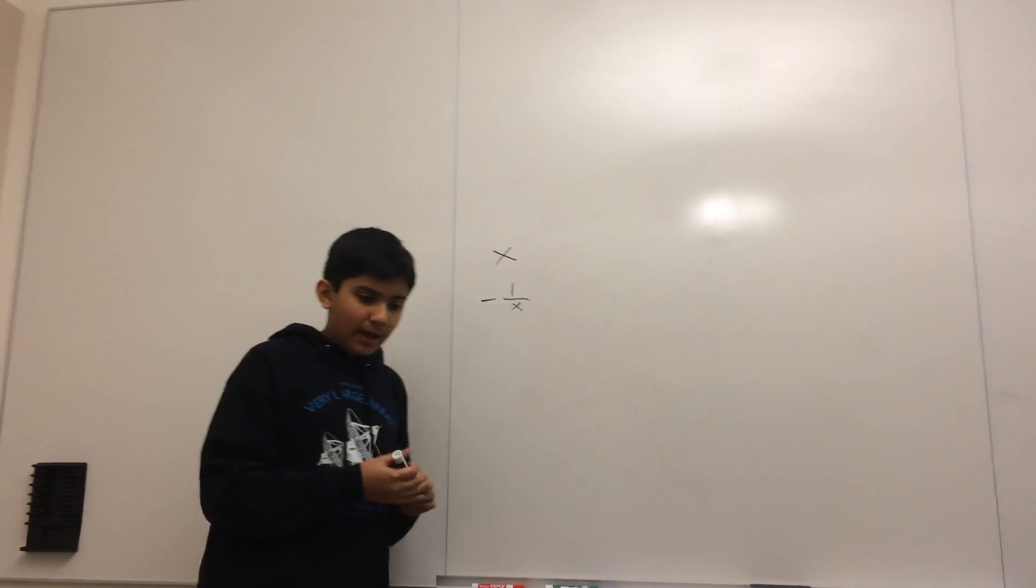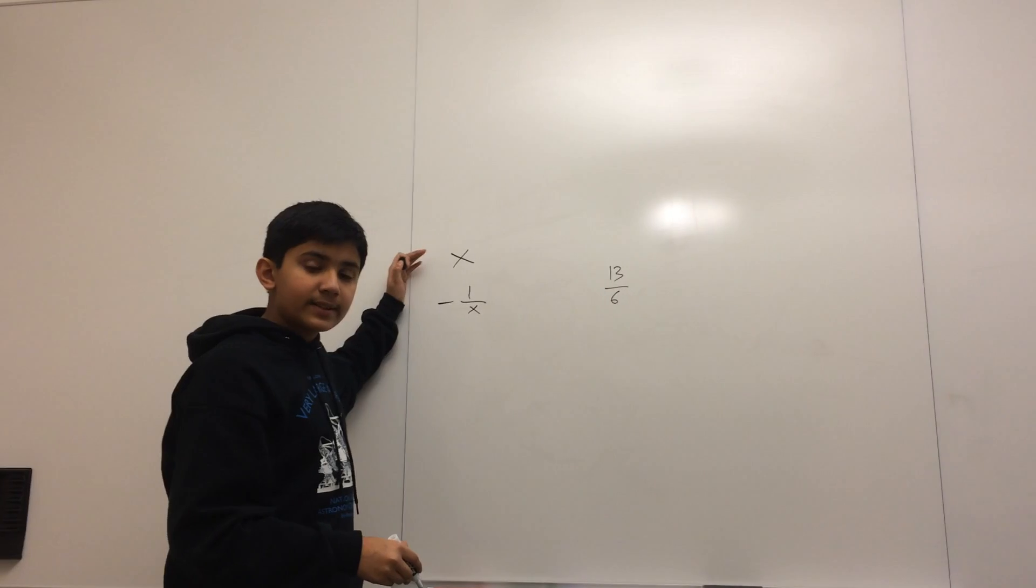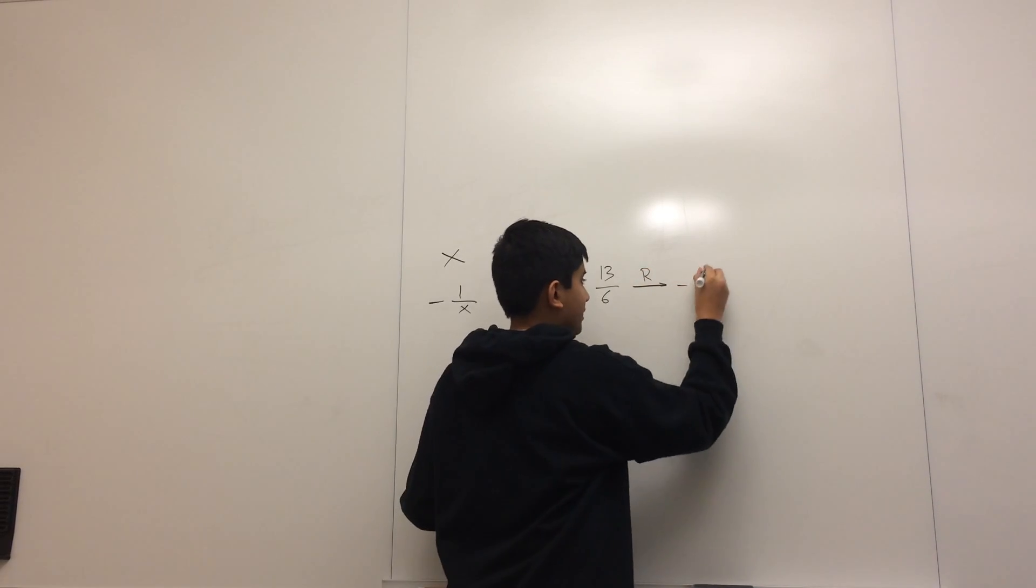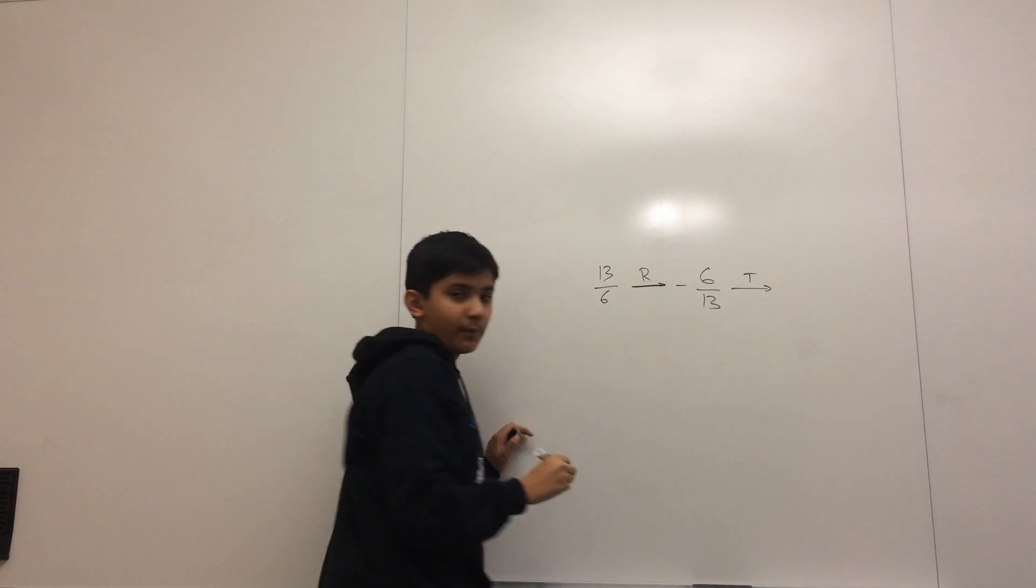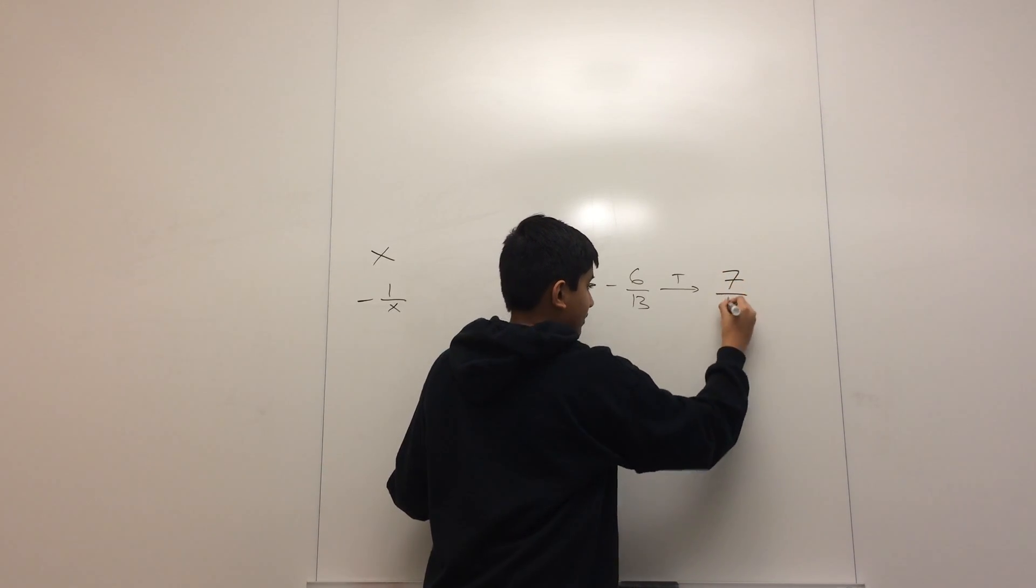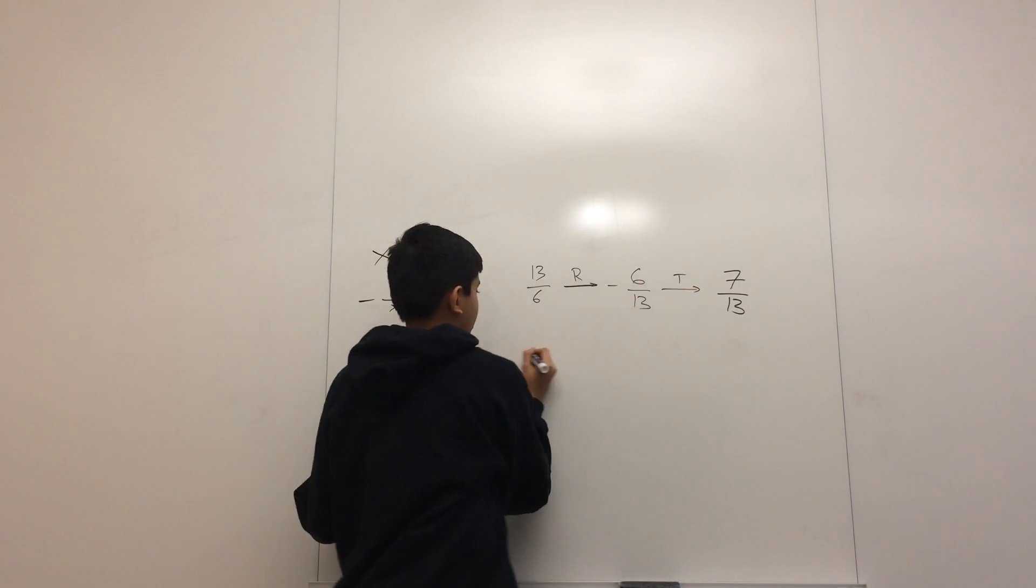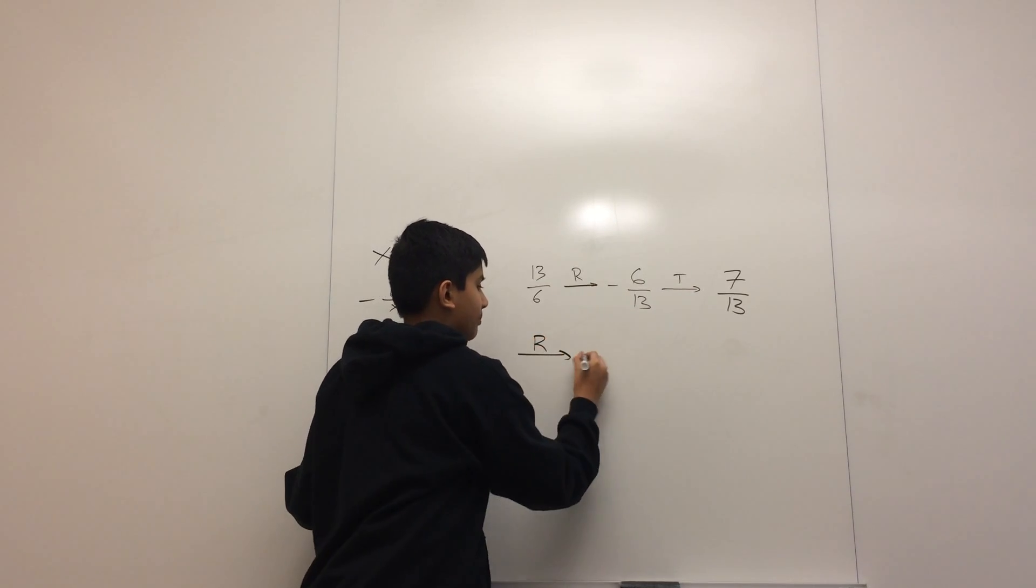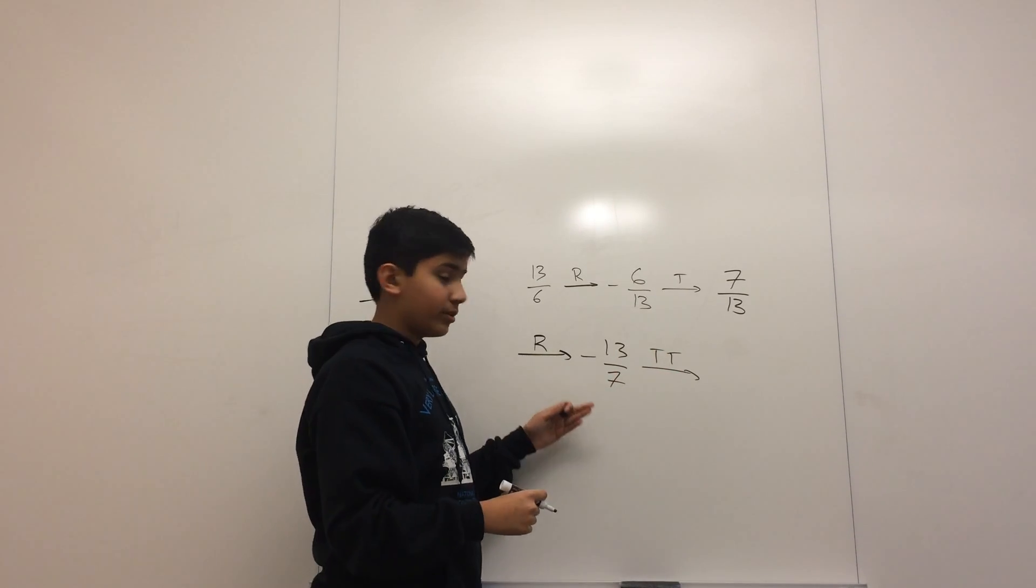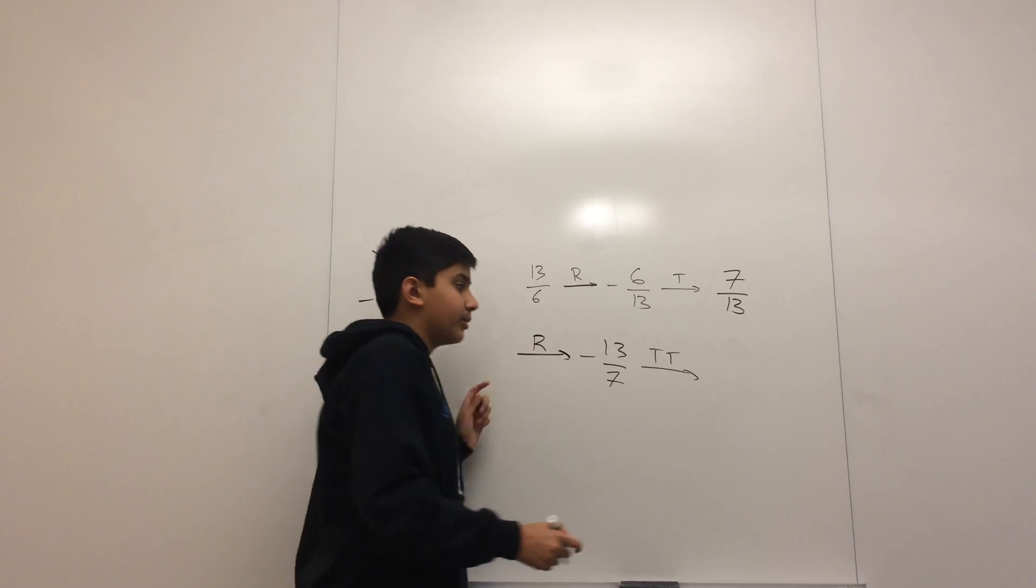I'll just show you the algorithm in practice. Let's say I start with the number 13 sixths, just a random number. Well, the algorithm says right now it's positive, so do the r move. I'll apply the r move, and this takes me to minus 6 by 13. Now I'll apply the t move because I want to add one to it, and that takes me to 7 thirteenths. Now I'll apply the r move. That takes me to minus 13 by 7.